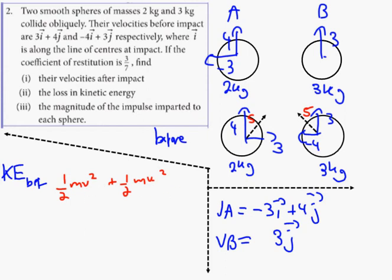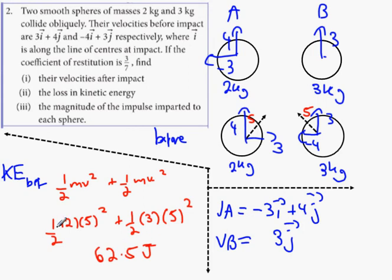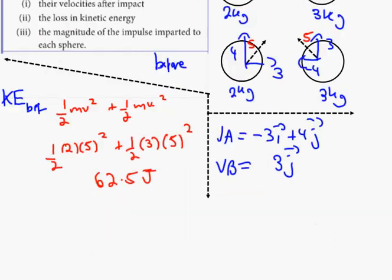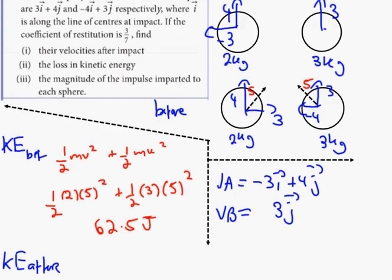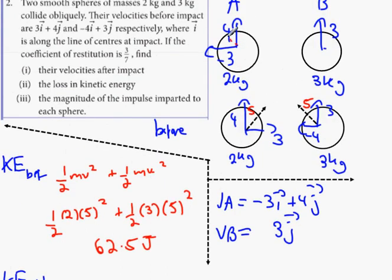What we're going to have is a half 2 times 5 squared, and the other one is a half 3 times 5 squared. That's 62.5 joules. Kinetic energy afterwards, once again we're looking at these velocities. This one is coming back with a velocity of 5 - a 3, 4, 5 triangle. And this one is just a straight line going up at 3.